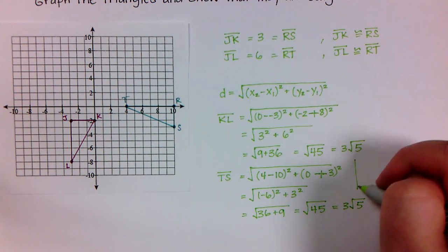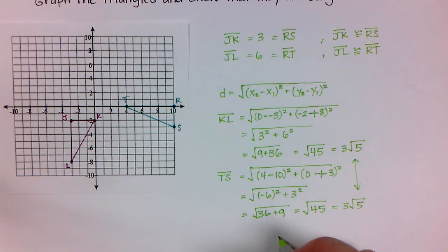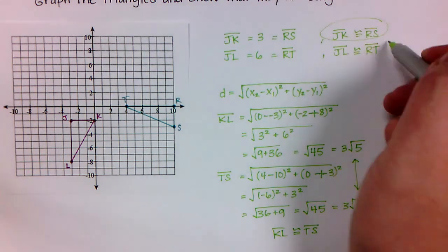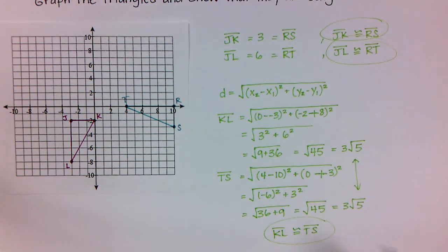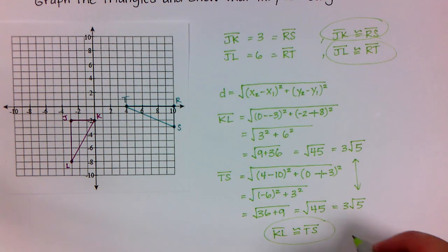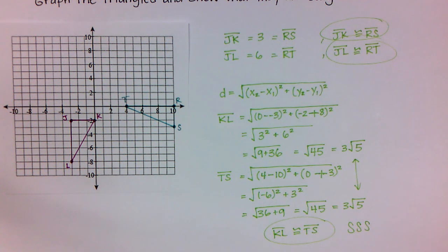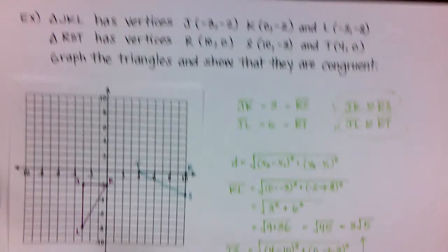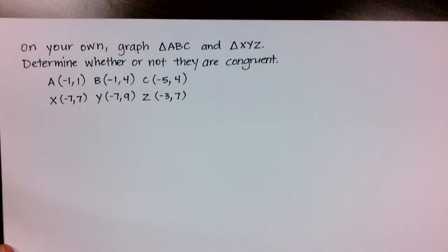Look at that — these are exactly the same! So KL is congruent to TS. Because I've proven that all three sides of one triangle are congruent to the three sides of the other, I have proved that both triangles are congruent to one another by Side-Side-Side. That's all we're going to learn today.